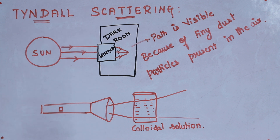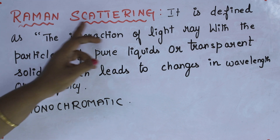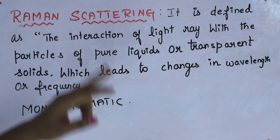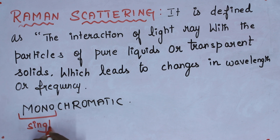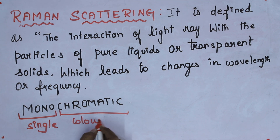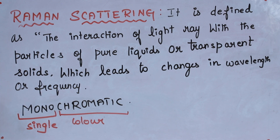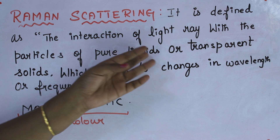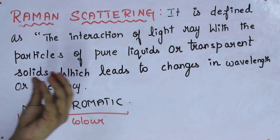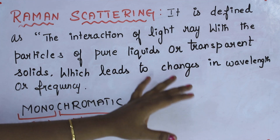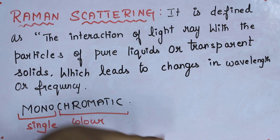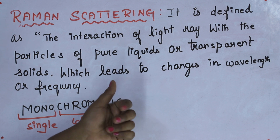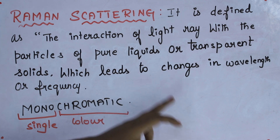Now we are going to discuss what is Raman scattering. Before we see this topic, you should know what is monochromatic. Mono means single, and chromatic is related to colour, so single colour is called monochromatic. When a parallel beam of monochromatic light passes through either pure liquids or transparent solids, a part of the light ray will get scattered. The scattered rays have additional frequencies or wavelengths other than the incident frequency or wavelength — such scattering is called Raman scattering.